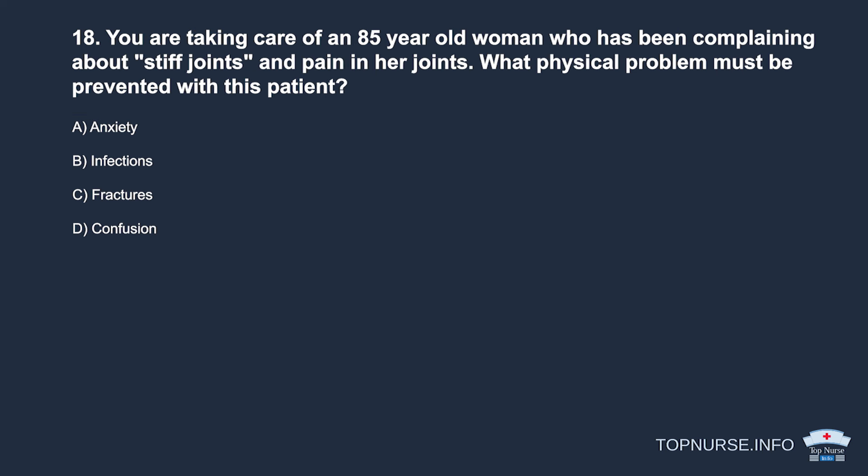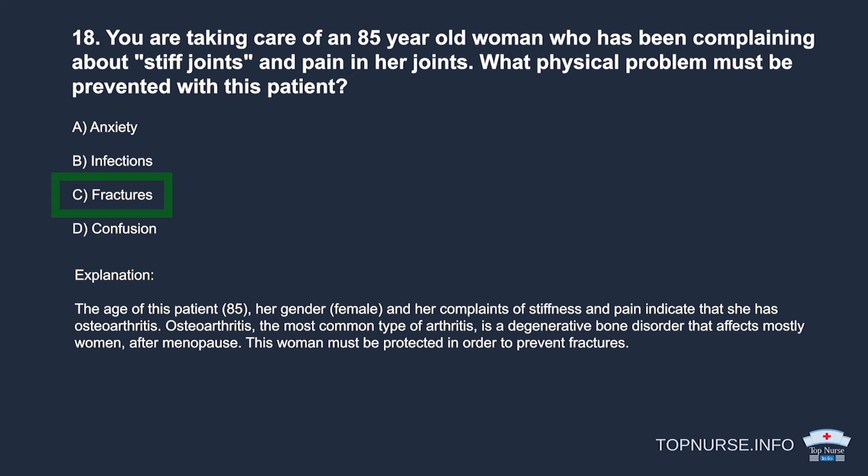Question 18: You are caring for an 85-year-old woman complaining of stiff and painful joints. What physical problem must be prevented? a. Anxiety. b. Infections. c. Fractures. d. Confusion. Correct answer: c. Fractures. Her age, gender, and complaints of stiffness and pain indicate osteoarthritis — the most common type, a degenerative bone disorder affecting mostly women after menopause. This woman must be protected to prevent fractures.